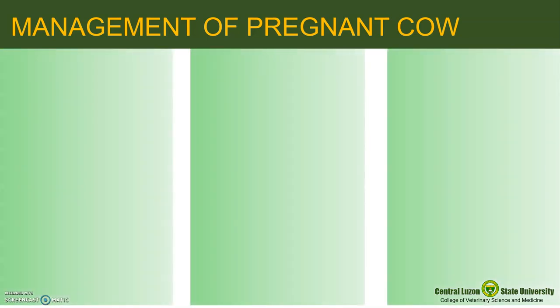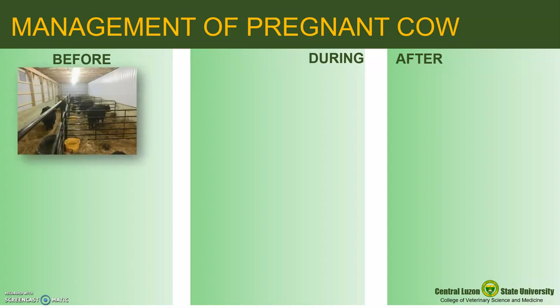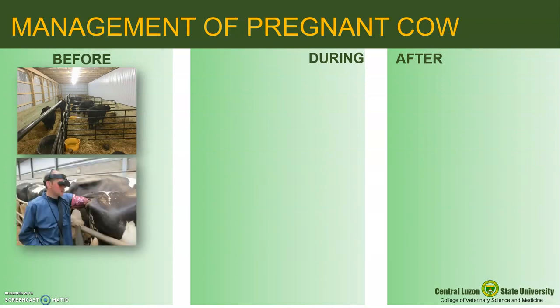Pregnant cows require different management before, during, and after calving or parturition. Before calving, separate the cows expecting to calve from the pregnant herd and keep them individually in a maternity pen. This should be done 2 months before calving. Check the calf presentation 2 weeks before calving through rectal palpation or ultrasound. This is to know if there will be malpresentation requiring assistance during calving. Deworming is also done 1 month before parturition.